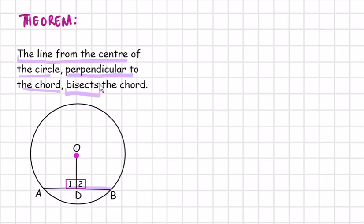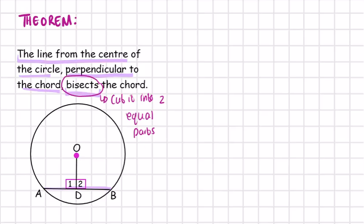In order to understand this we need to know what the word bisect means. To bisect something means to cut it into two equal parts. So basically what is going on here is that OD is running from the center of the circle, it's perpendicular to the chord, and what it does is bisect AB. So if it cuts it into two equal parts, it means that AD is going to be equal to DB.